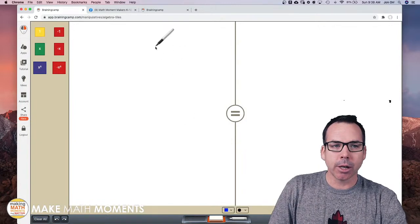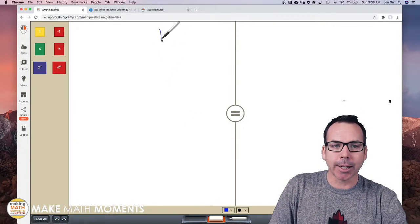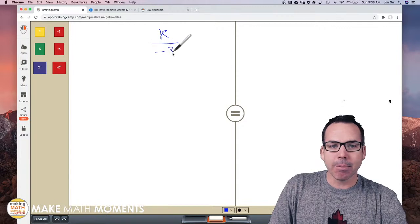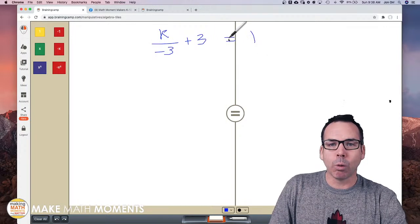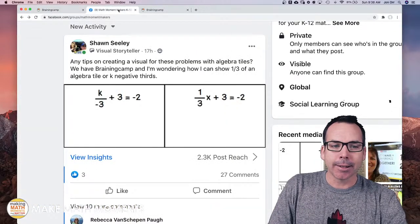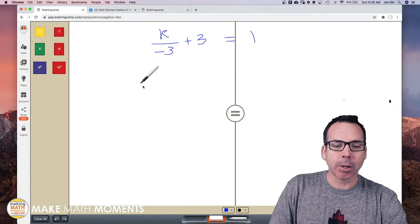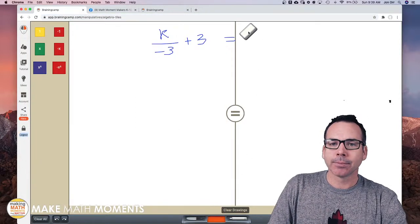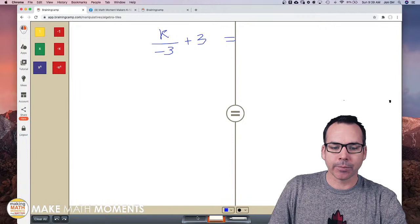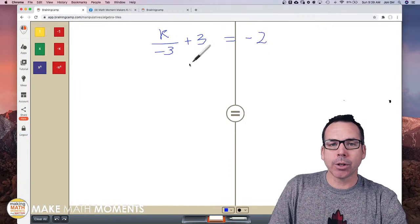I've got my pen tool and I'm just going to write Sean's equation up on the screen here: K divided by minus three plus three, and then that all equals... let me check... it equals negative two.